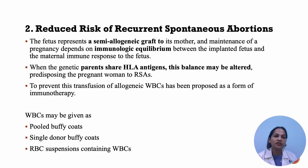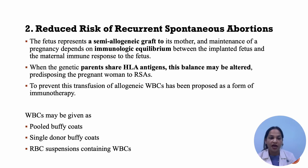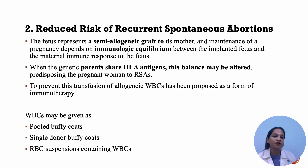The next beneficial effect is reduced risk of recurrent spontaneous abortion. The fetus represents a semi-allogeneic graft to its mother, and the maintenance of pregnancy depends on the immunological equilibrium between fetus and mother. When genetic parents share the HLA antigen, this equilibrium is altered, predisposing the pregnant woman to recurrent spontaneous abortion. To prevent this, transfusion of allogeneic WBCs has been proposed, given in the form of pooled buffy coat, single donor buffy coats, and RBC suspensions containing WBCs.